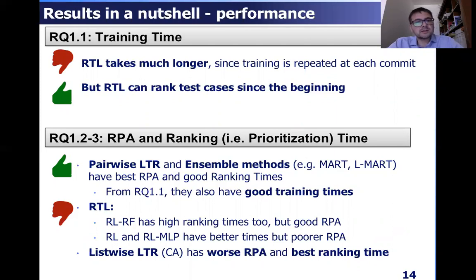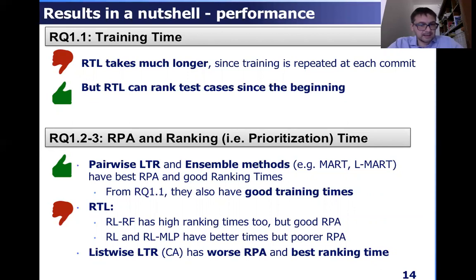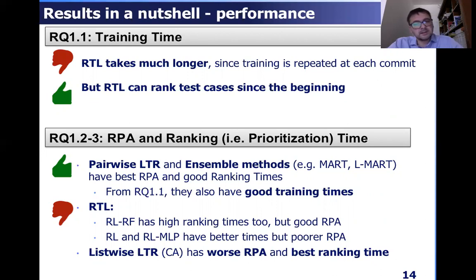In terms of performance effectiveness and efficiency metrics, pairwise RTR and ensemble methods achieve the best RPA and good ranking times, and they also have good training times. Reinforcement learning has high ranking times as well as high training times. At the other extreme, listwise RTR has worse RPA but best ranking times, which can be useful in some scenarios.